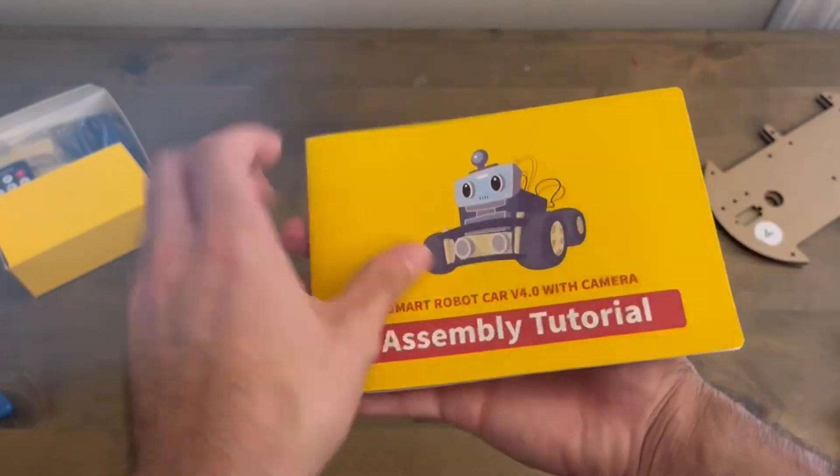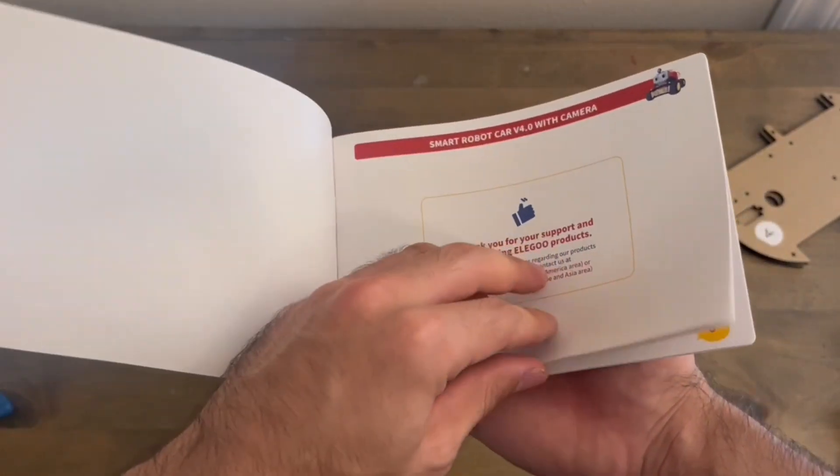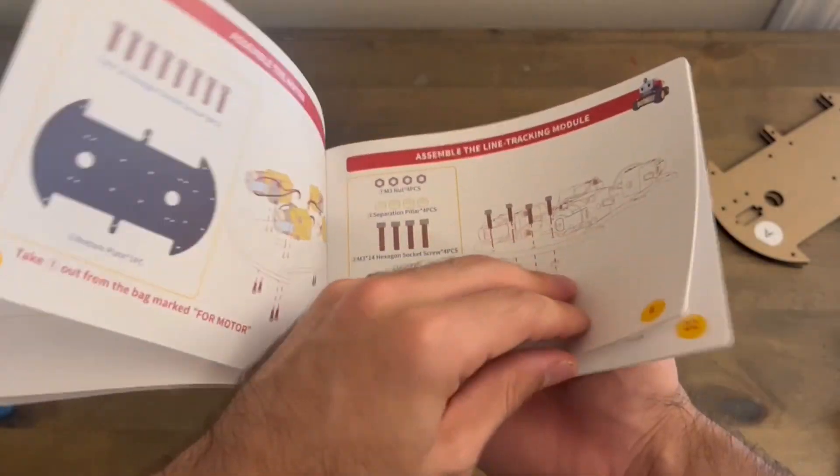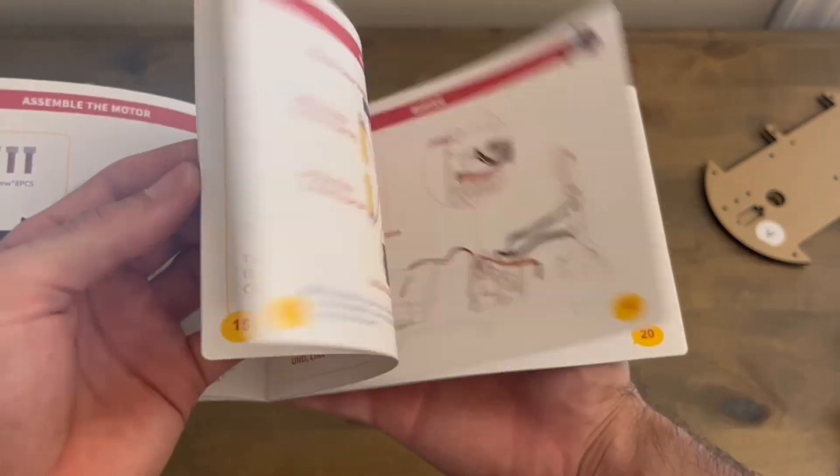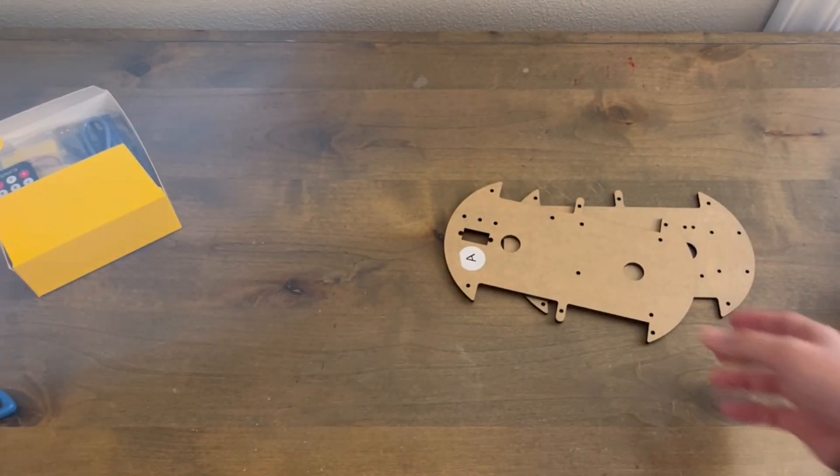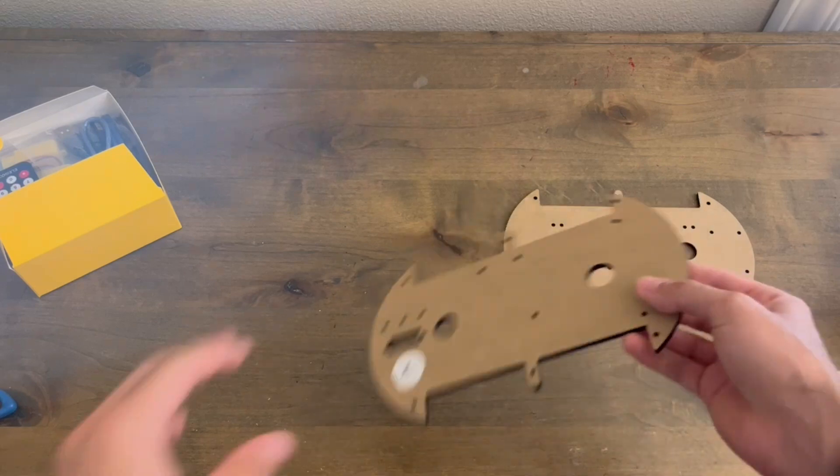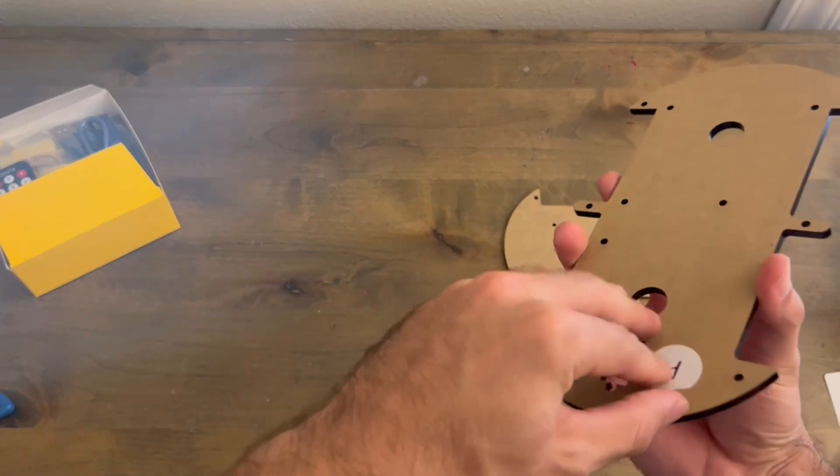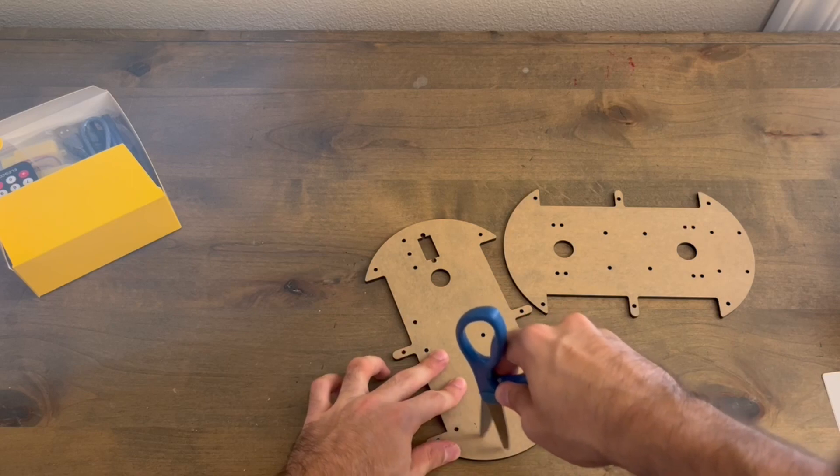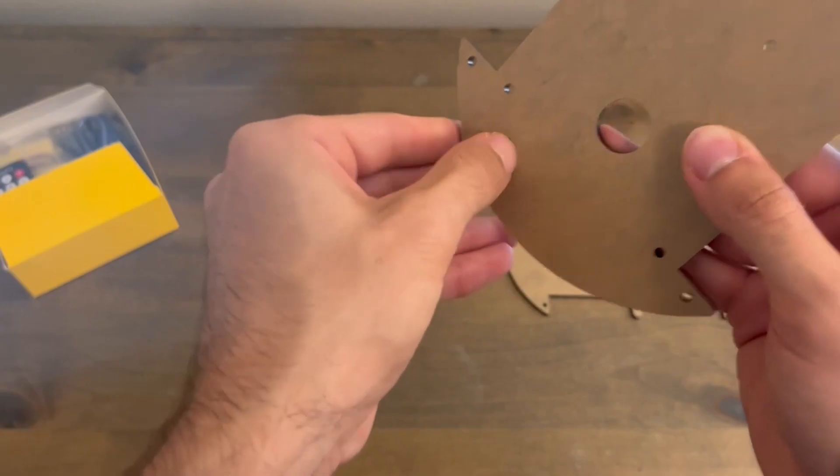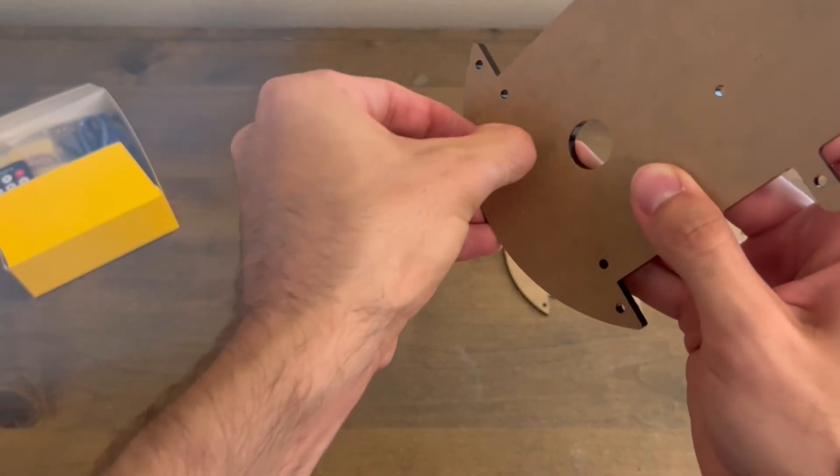The assembly tutorial comes with a complete list of materials for the build, as well as step-by-step instructions. I immediately ran into a bit of trouble where the first step is to remove the protective film from the acrylic chassis parts. You can very lightly cut the film using either a pair of scissors or a knife, and then peel off the rest by hand.